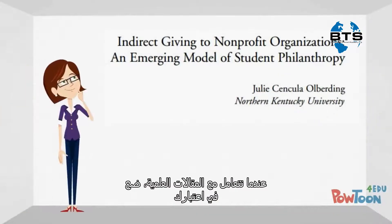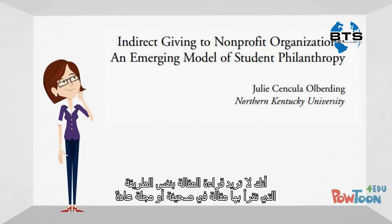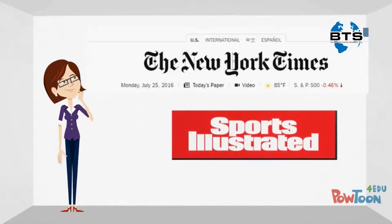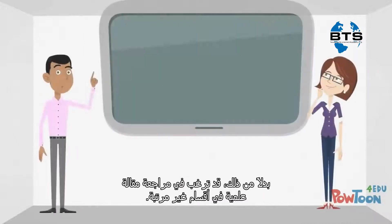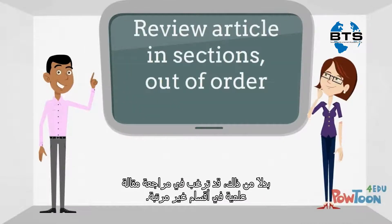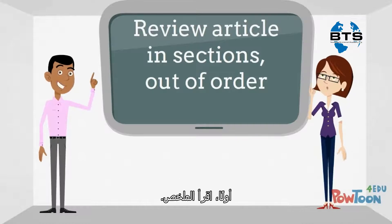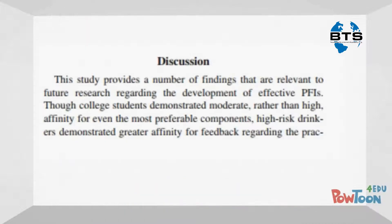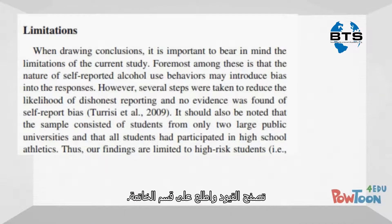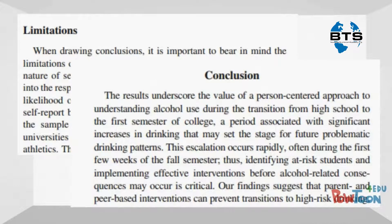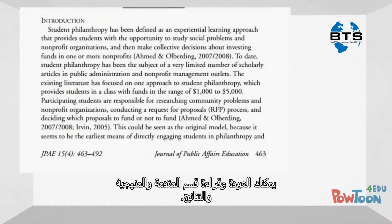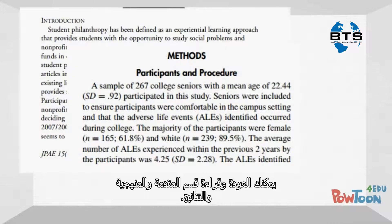When you approach a scholarly article, keep in mind that you do not usually want to read the article the same way you would a newspaper or magazine article — straight through from beginning to end. Instead, you may want to review a scholarly article in sections, out of order. First, read the abstract. Then you may want to skip ahead to the discussion section, skim through the limitations, and look at the conclusion section. Then, if you still think the article is relevant, you can go back and read the introduction, the methods, and the results section.